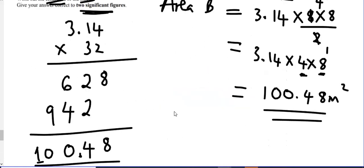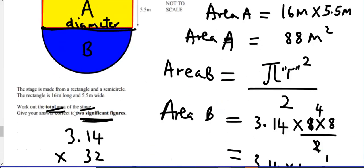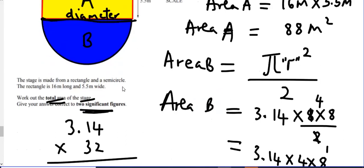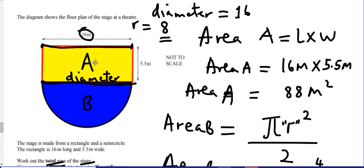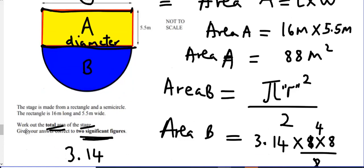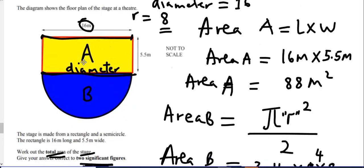This question is not asking for perimeter — it's just asking for the total area of the stage, which is 190 meters squared. Until next time, bye-bye. Stay tuned — tomorrow I'll be uploading another video for reading timetables. Bye-bye for now.